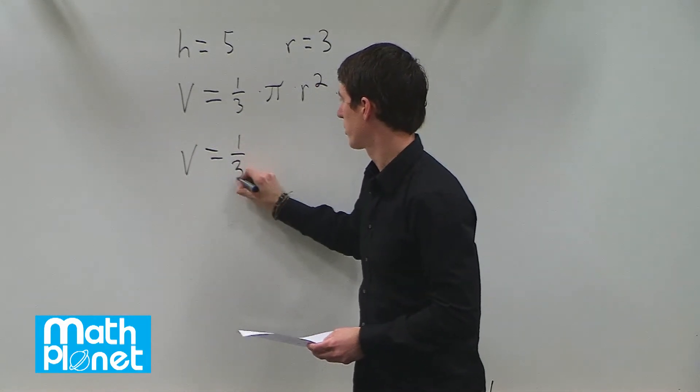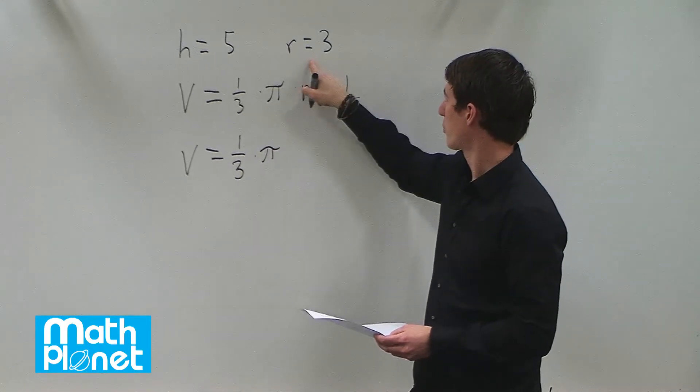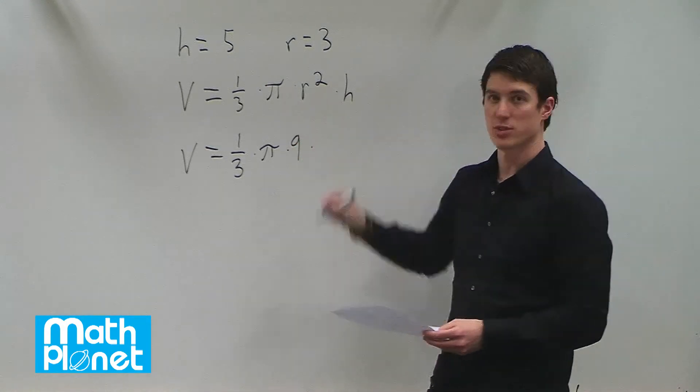So that becomes 1 third times pi, r squared is 3 squared, so 3 squared is 9, and h is just 5.